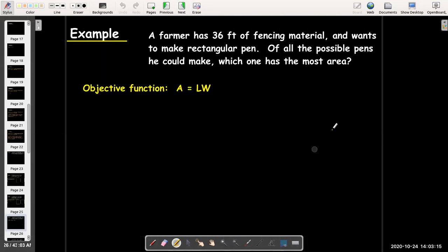So, most area is telling me that my area is the objective function. I'm trying to maximize the area. So, we know from geometry, the area is length times width. But the problem is that that has two variables, length and width.